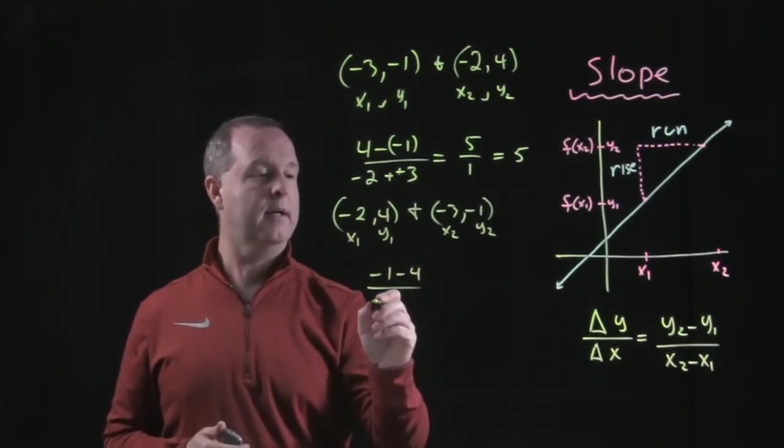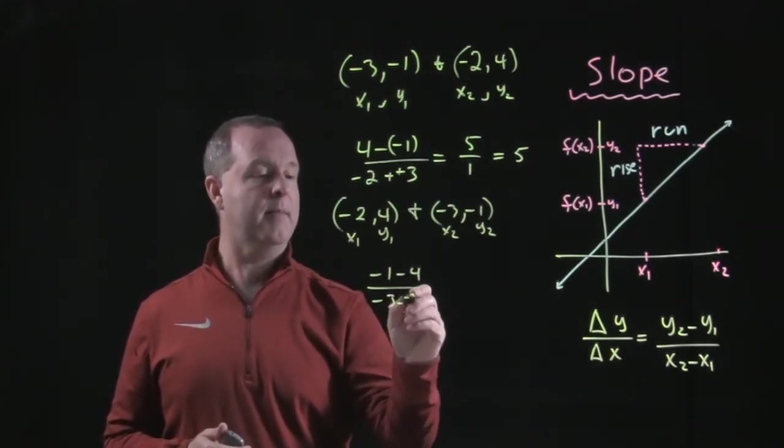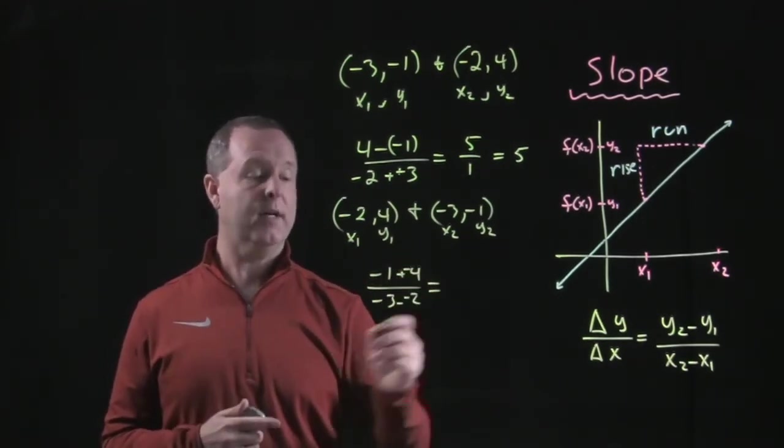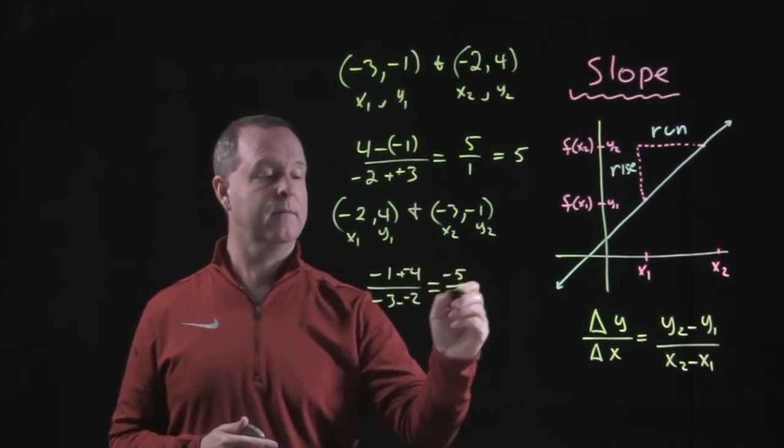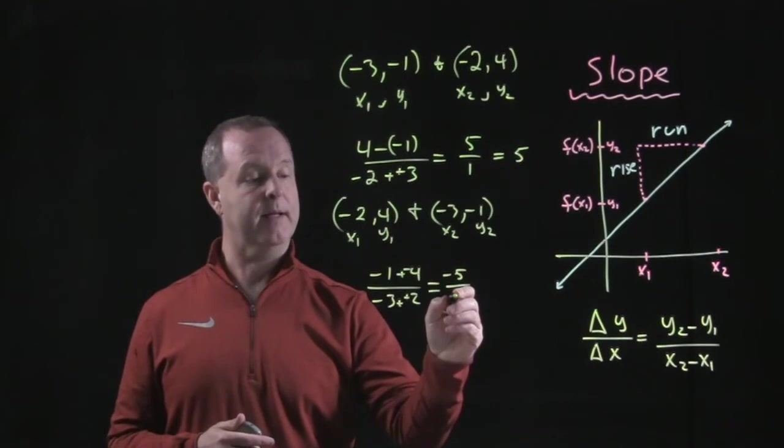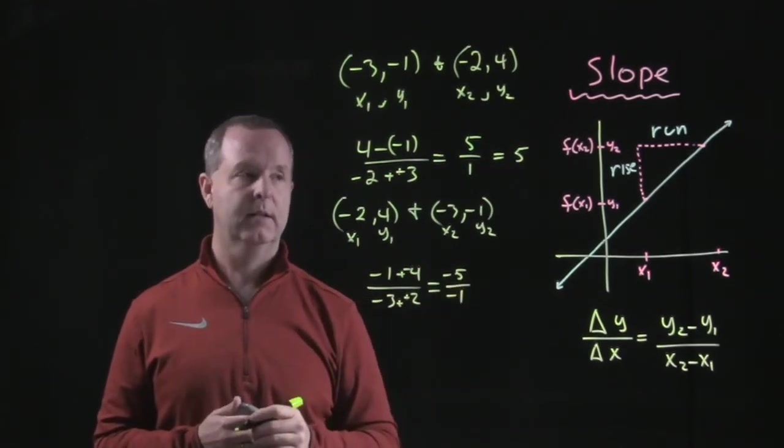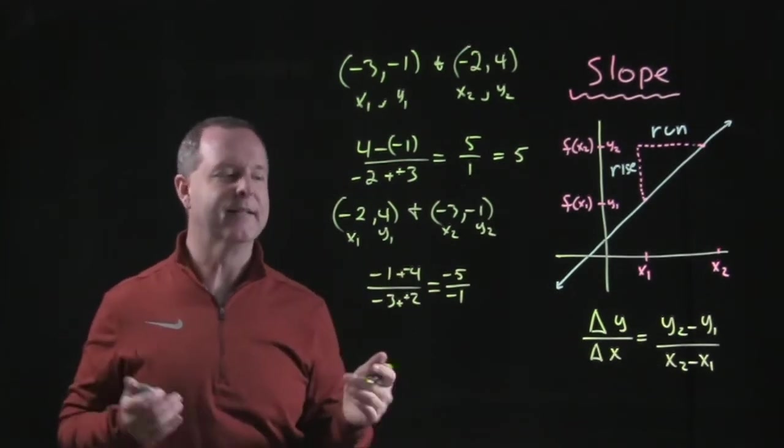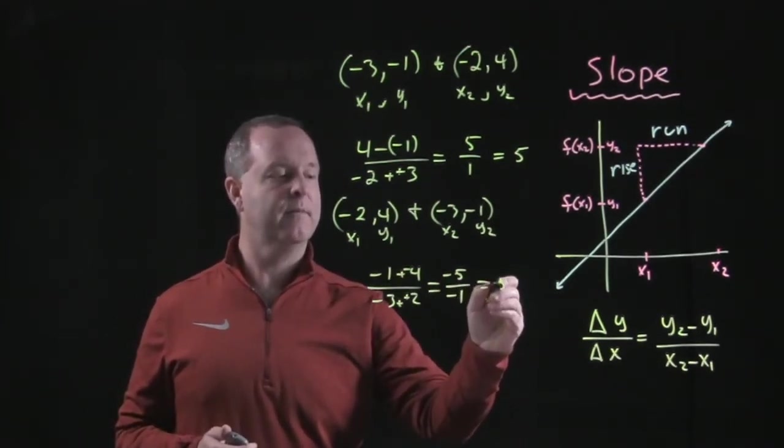Negative 1 minus a 4 gives me a negative 5. Negative 3 minus negative 2 gives me a negative 1. Wait a minute, I should have got the same answer. Well, yeah, I did. This reduces down to 5.